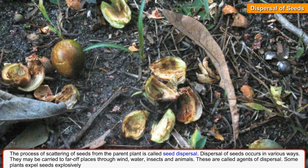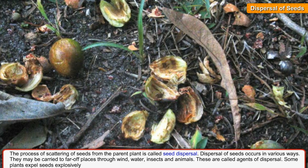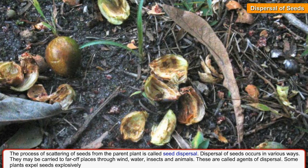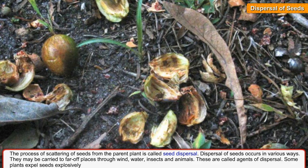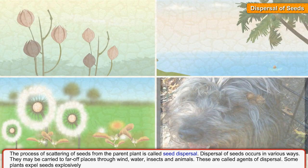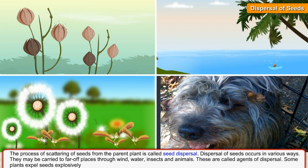The process of scattering of seeds from the parent plant is called seed dispersal. Some plants expel seeds explosively.